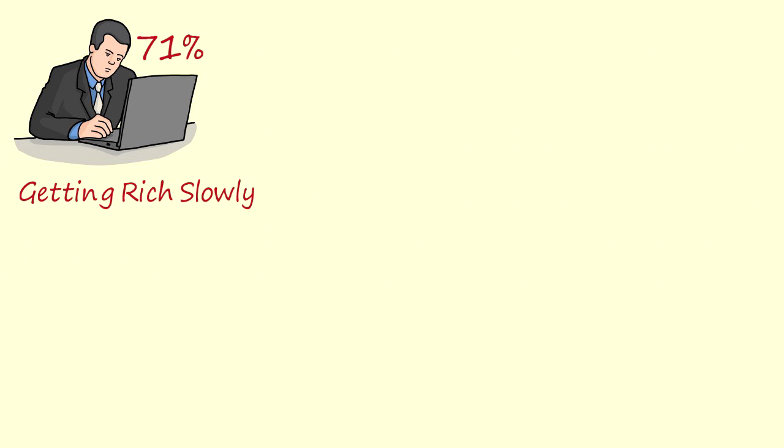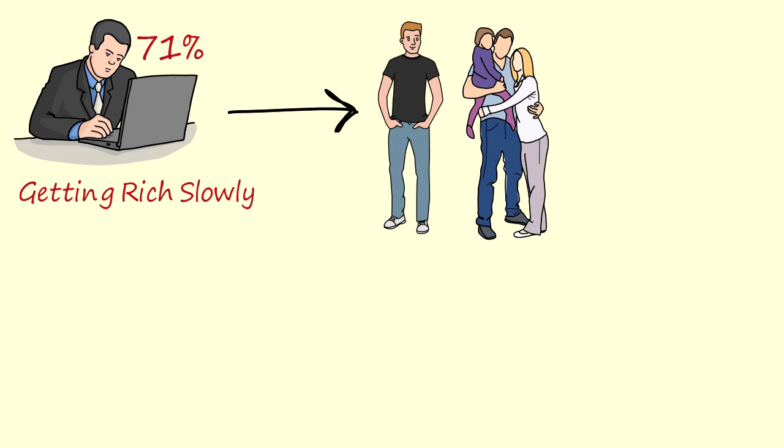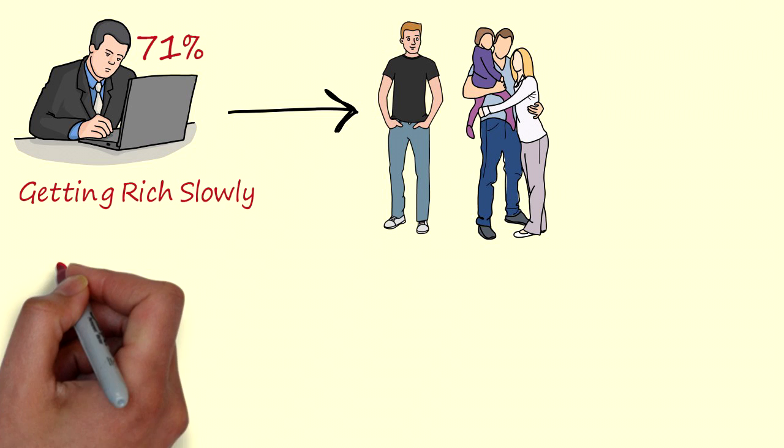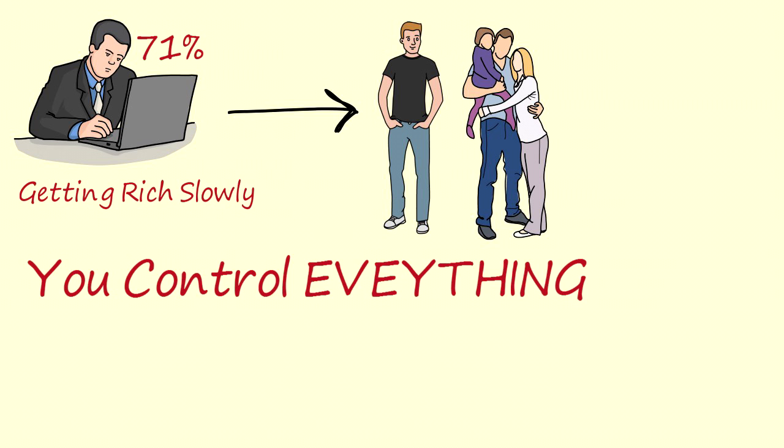A full-time job is the getting rich slowly mindset that kills your quality of life. You are working 40 to 50 hours a week with a lot of stress just so you can enjoy the rest of your time with your friends and family. The thing I need you to understand is that you can get rich quickly for one and one reason only. You control everything, and I'll explain.